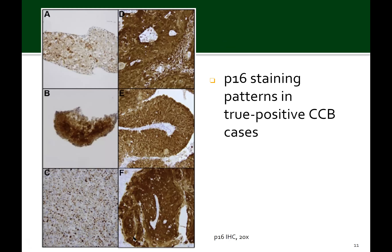Looking at the true positive cytolite-fixed cell block cases: seven of the total 24 cytolite cases were reported as P16 positive. They showed 10 to 85% nuclear staining as seen in panels A and B, and 35 to 95% cytoplasmic staining as seen in panels B and C. Cytolite cell blocks had a 0% false positive rate, with all cytolite cell block P16 positive cases confirmed on their subsequent surgical material. Panels A, B, and C correspond with panels D, E, and F, showing the matching surgical material.